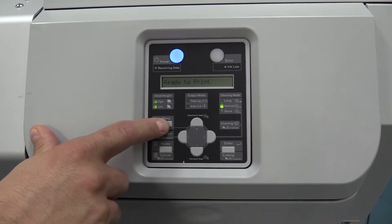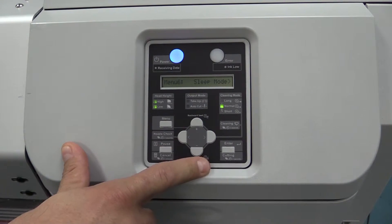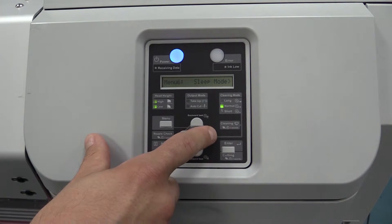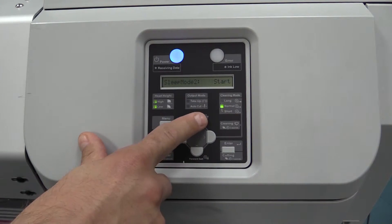To enter the sleep mode menu, simply press the menu button, cycle down until you find sleep mode, which is menu 6. You're going to have two options in here: set timer and start.